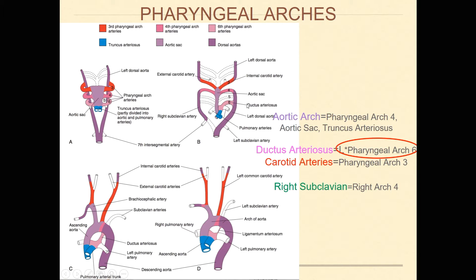Arch six is important for the formation of the ductus arteriosus. This is important for fetal circulation so that blood can be maintained going from the right to the left heart, because in fetal circulation the oxygenated blood is coming from the mother, moving from the right to the left side of the heart and then going out to the systemic circulation.